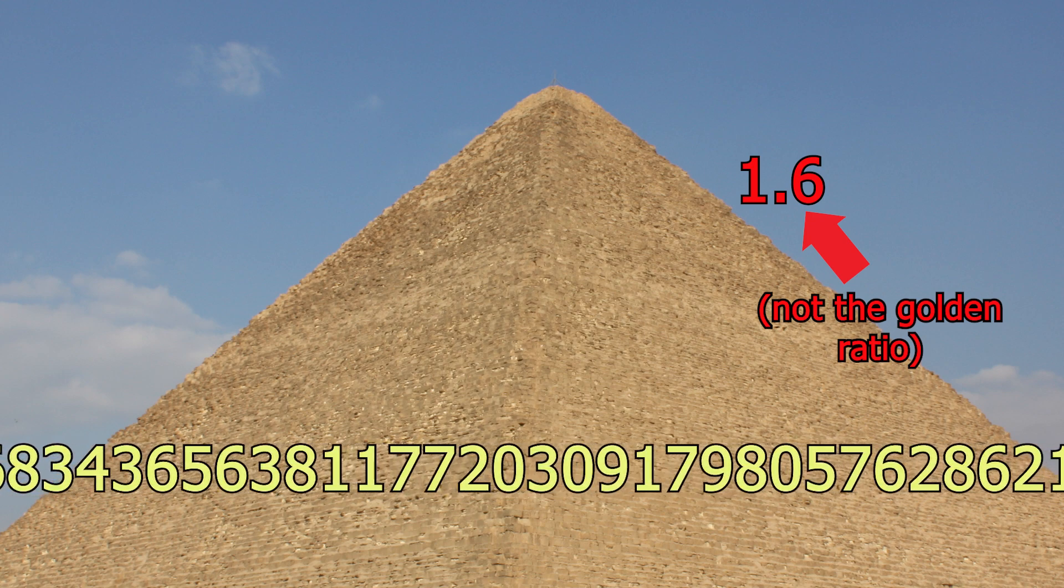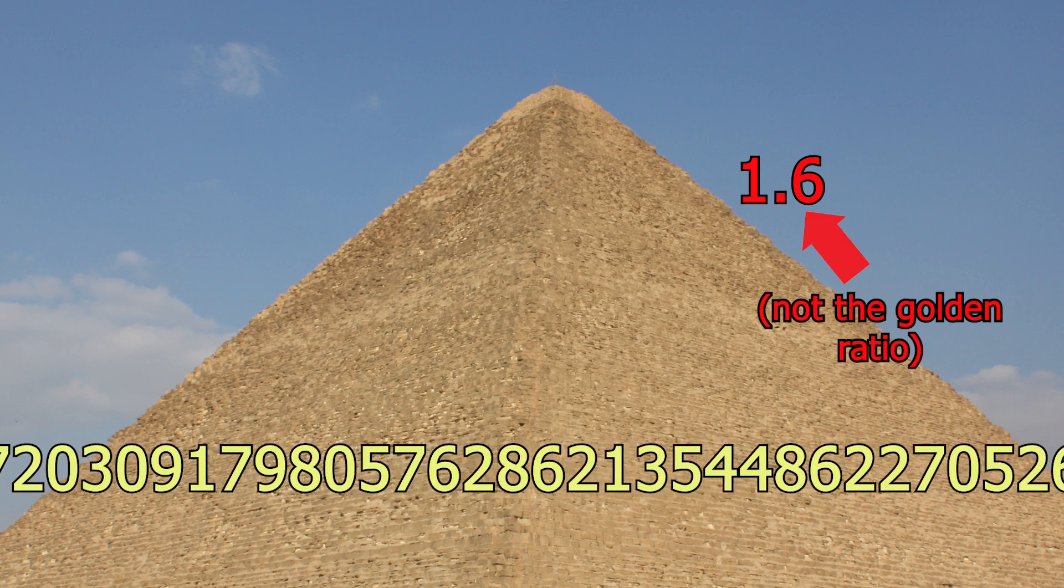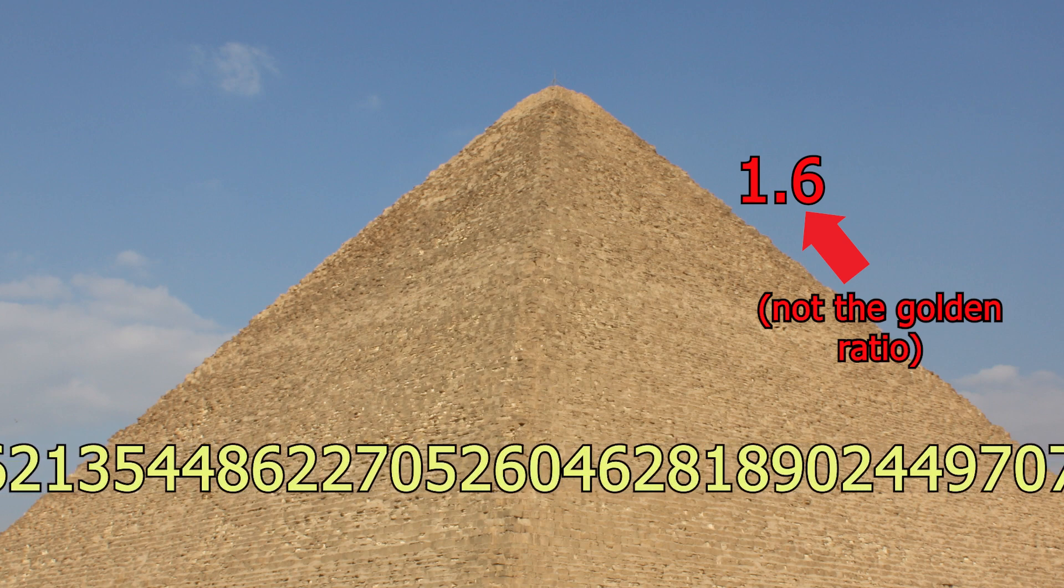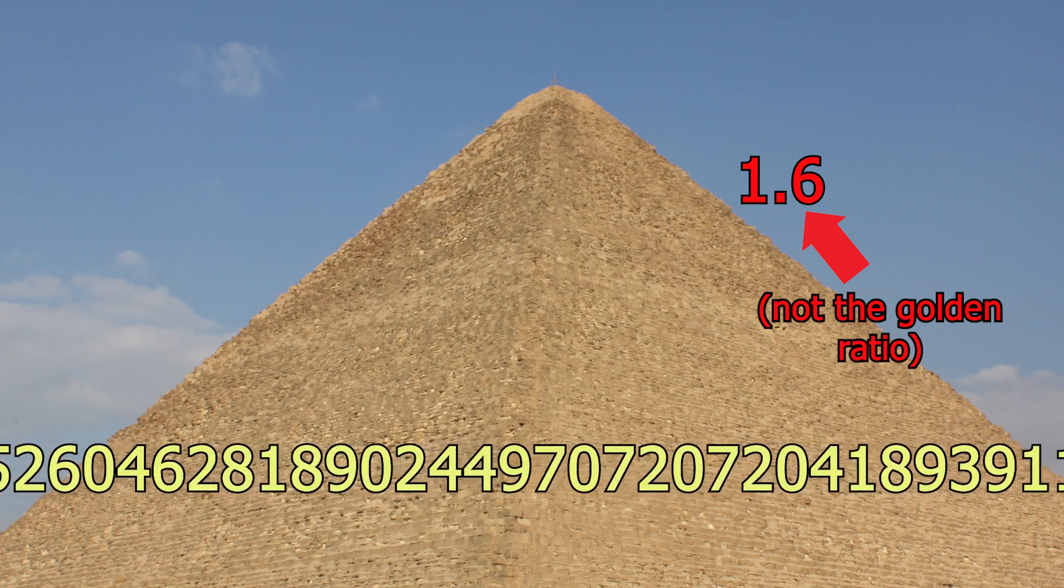But if it's a finite number, it's not truly the golden ratio. And because none of our measurements are even precise for the Great Pyramid, you can only have an approximate number. Whether it's the actual golden ratio or just a regular number, you can't know.